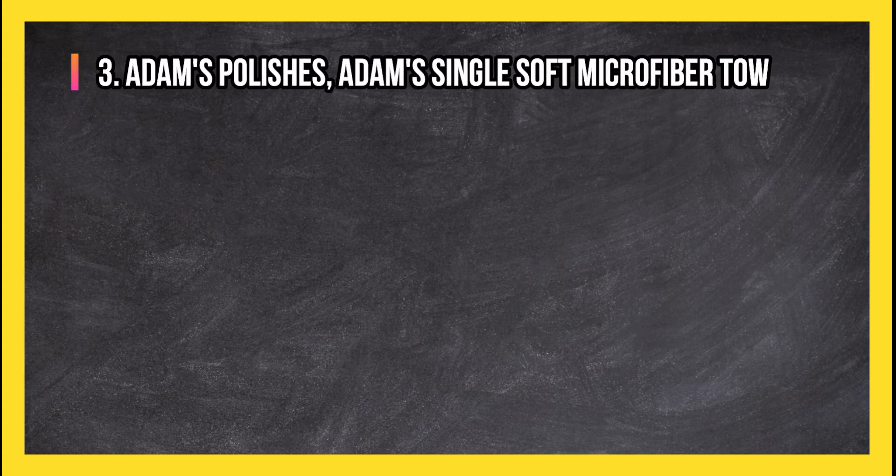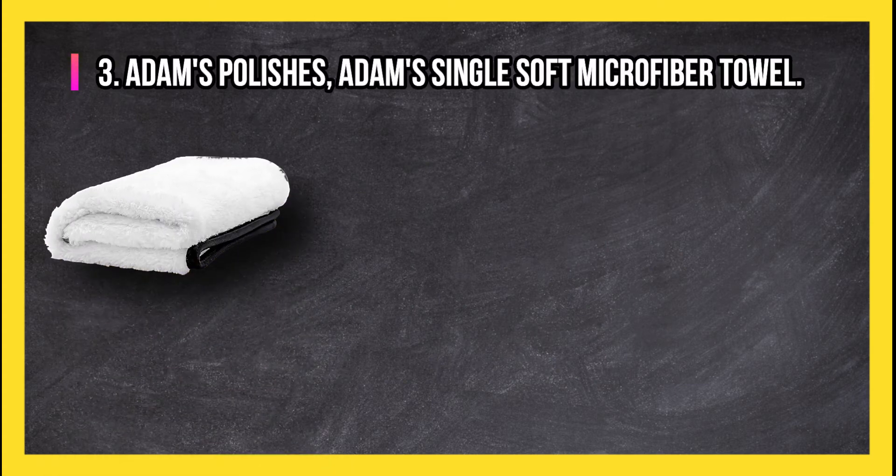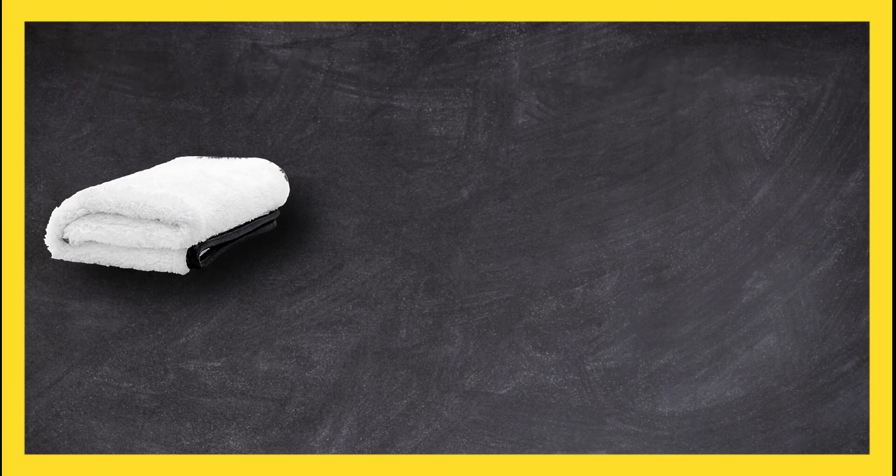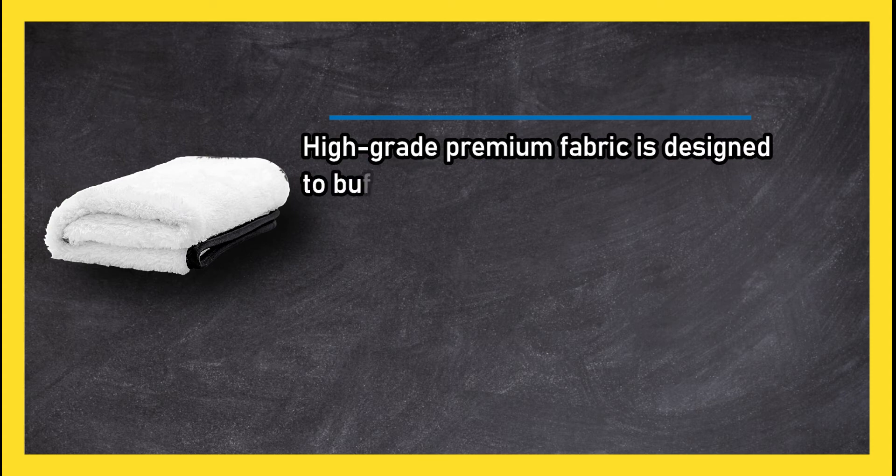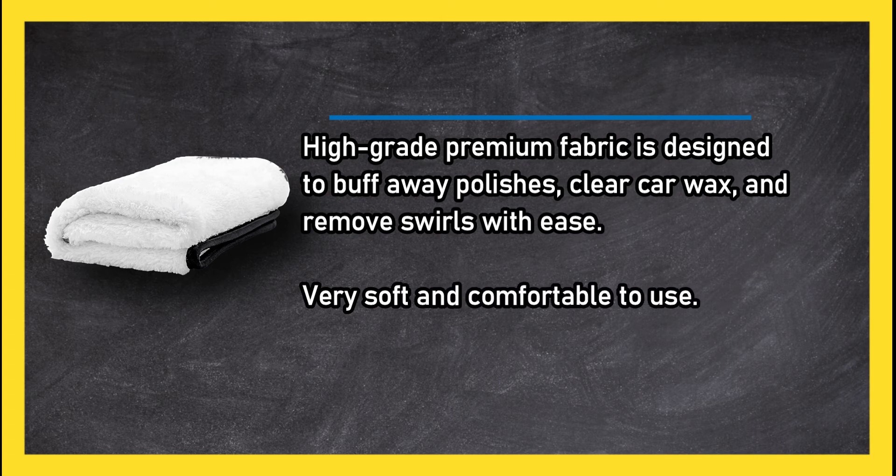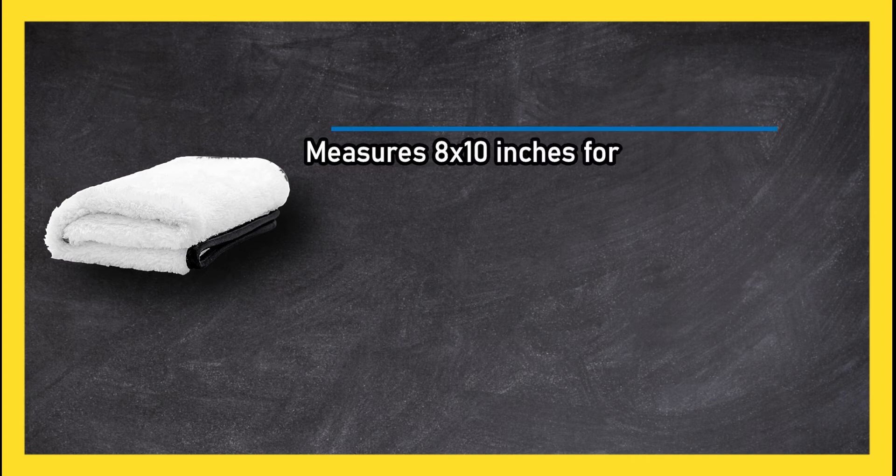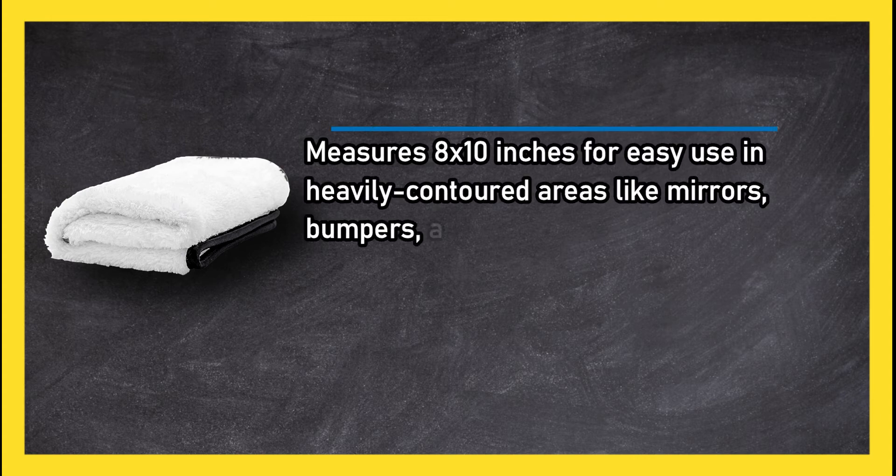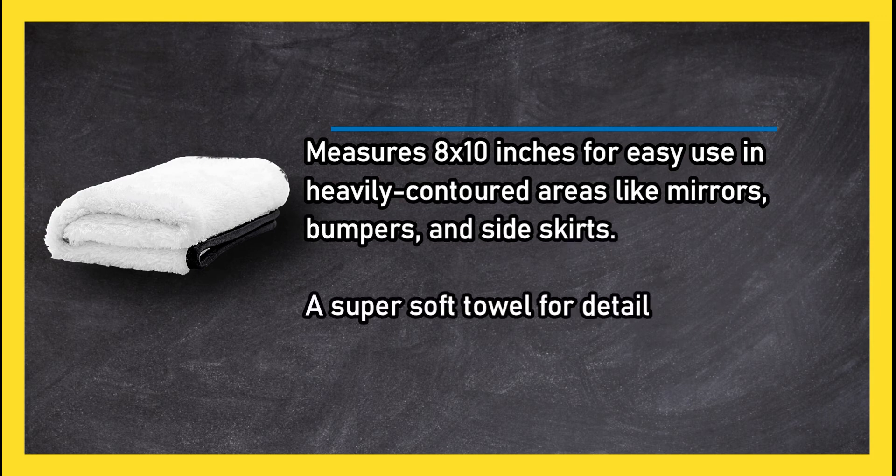At number three, Adams Polishes Adams Single Soft Microfiber Towel. High-grade premium fabric is designed to buff away polishes, clear car wax, and remove swirls. These are very soft and comfortable to use, measuring 8 by 10 inches for easy use in heavily contoured areas like mirrors, bumpers, and side skirts. A super soft towel for detailing delicate surfaces, somewhat expensive for a single towel.